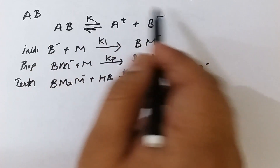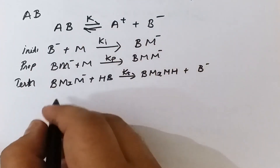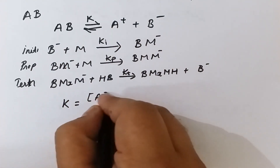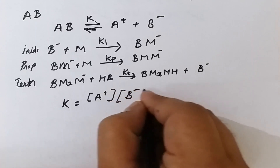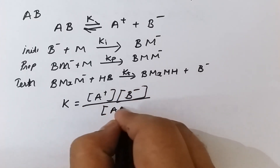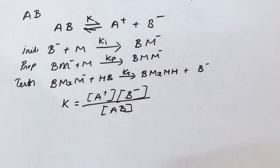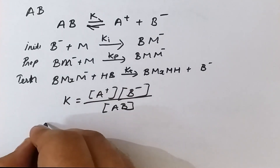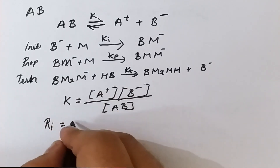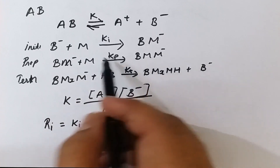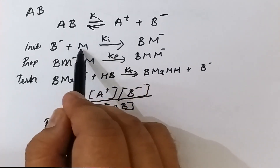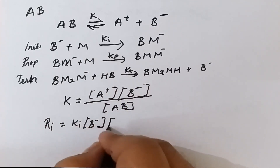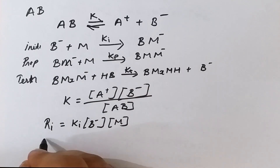Now we will individually examine the kinetics for each of these steps. The first step is dissociation of the catalyst, where the equilibrium constant K equals the concentration of A⁺ times concentration of B⁻ divided by concentration of AB. The next step is the initiation step, where the rate of initiation rᵢ equals kᵢ times concentration of B⁻ times concentration of monomer M.